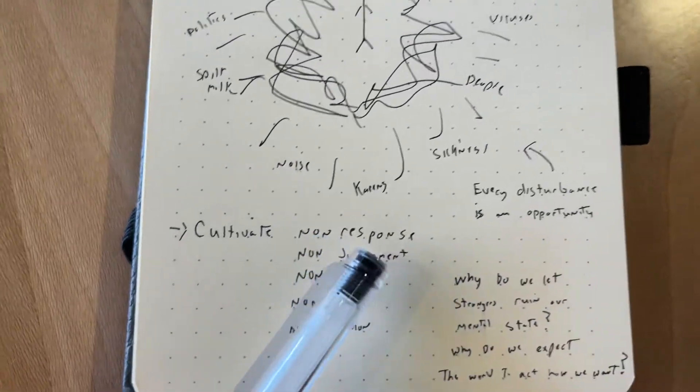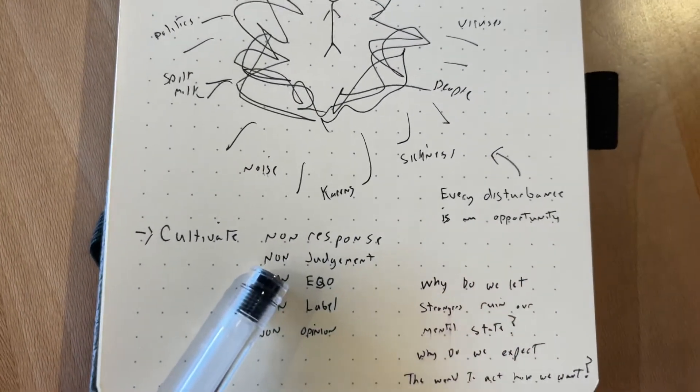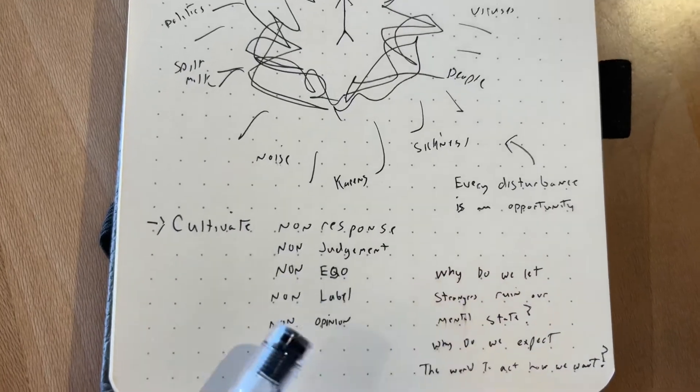And so I thought to myself, I want to cultivate non-response. And then I've expanded this to: I want to cultivate non-judgment, non-ego, non-label, non-opinion.